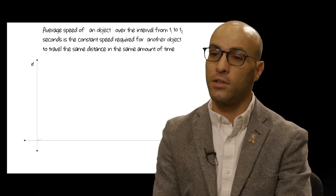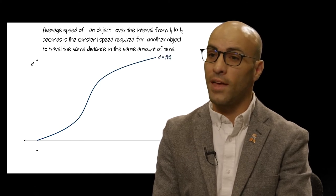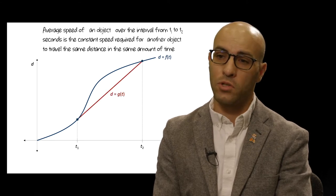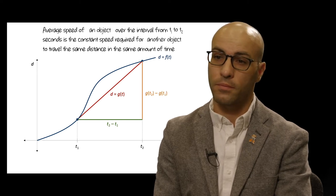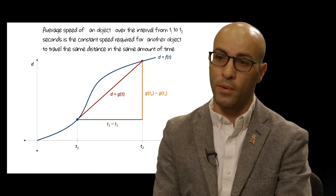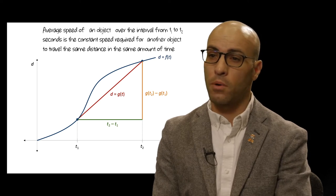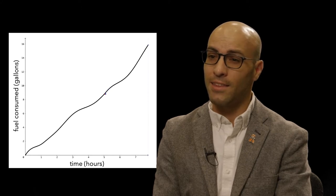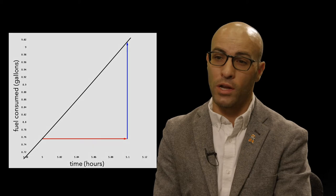The idea of average rate of change is important for characterizing the co-variation of quantities whose measures vary at a non-constant rate with respect to each other. We define the average rate of change of f over a particular interval as the constant rate of change of a linear function that has the same change in output values as the function f over the interval. Being a non-linear function, f of x does not vary at a constant rate with respect to x, meaning changes in f of x are not proportionally related to corresponding changes in x.